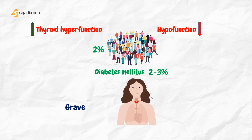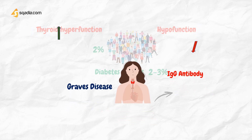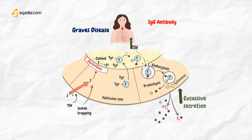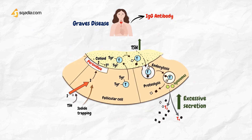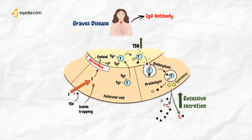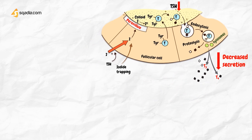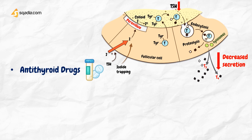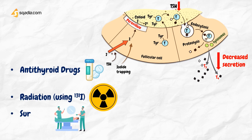In Graves' disease, hyperthyroidism is produced by an IgG antibody that causes prolonged activation of the TSH receptors and results in excessive secretion of T3 and T4. Thyroid activity can be reduced with drugs that decrease hormone synthesis or by the destruction of the gland with radiation or surgery.